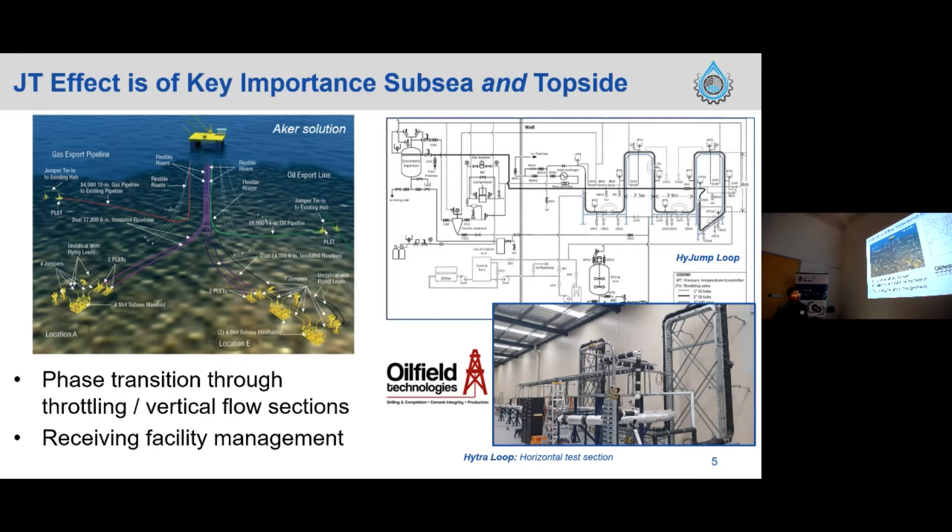To study this, first we had a hydrate loop, which is a horizontal test section, and we added the jumper section with a high jump loop. We observed quite impressive hydrate formation through the jumper, the JT valve. So now we are more dedicated to Joule-Thomson cooling with our new Joule-Thomson hydrate apparatus. This study can be applied to phase transition through throttling and vertical sections. We expect some pressure drop and also receiving facility management in terms of onshore plants.